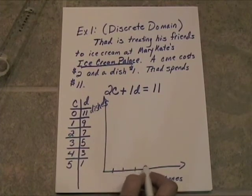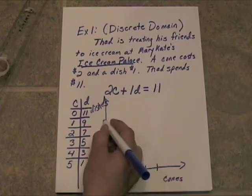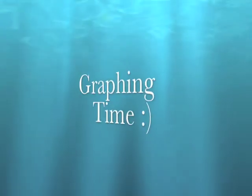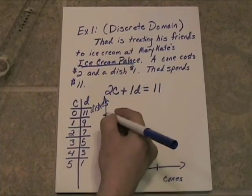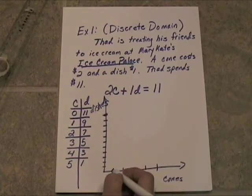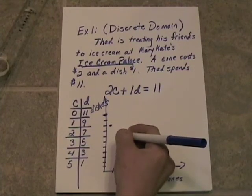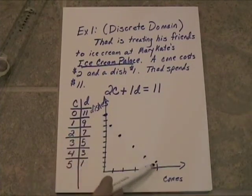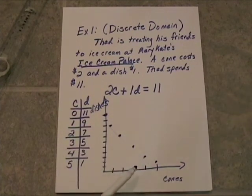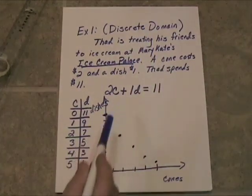At 0 cones we had 11 dishes, so there's a single point right there. At 1 cone there were 9 dishes. At 2 cones there were 7 dishes, and so on. You can see we do have a linear pattern. I was a little bit off on this one because I drew it freehand, but nevertheless we cannot connect these points because these are individual, discrete points that work for this particular problem.